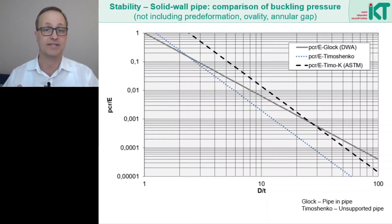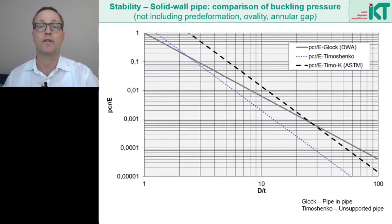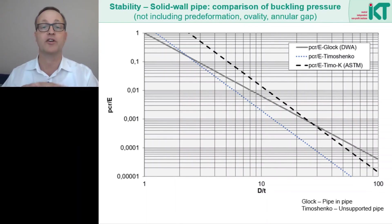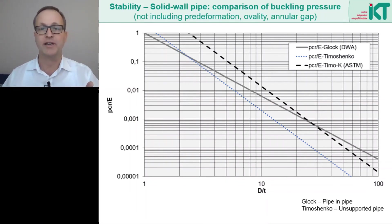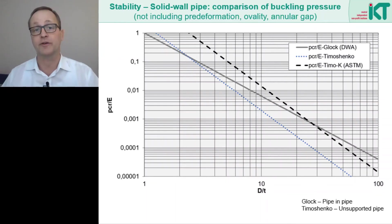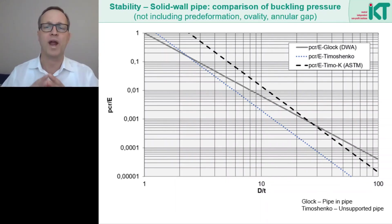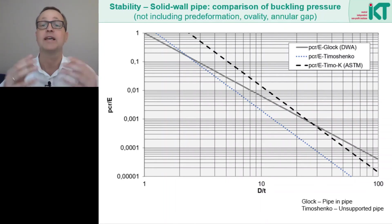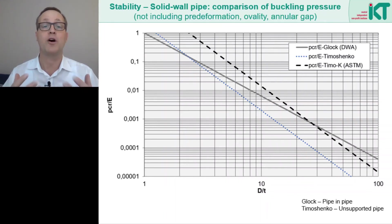Do these two calculation approaches produce similar results? The answer is a clear yes. Plotting the critical pressure normalized by E-modulus against the diameter-to-wall-thickness ratio, the ASTM values (dashed line) and the German standard values (solid line) differ in slope on a double logarithmic scale because the exponent is different — 3 for the free pipe, 2.2 for the ideal pipe-in-pipe system. However, the curves intersect at a diameter-to-wall-thickness ratio of about 30, which is typical for liner dimensions. For these practically relevant dimensions, both formulas therefore produce more or less the same results.